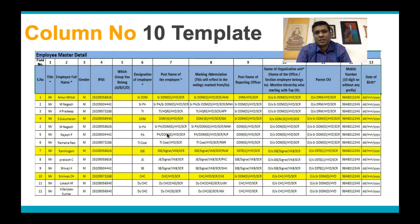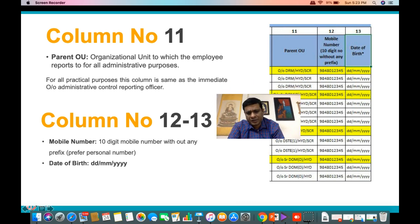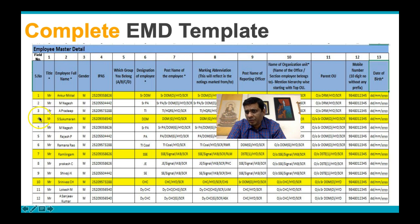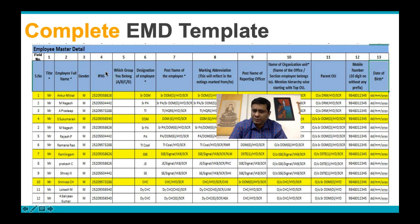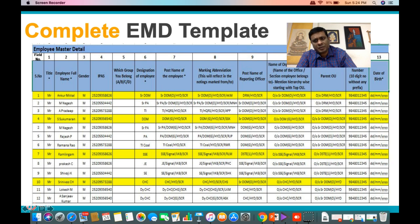The employee needs to be created on the eOffice platform before rolling it out for your unit. To recap: Column 1 is serial number, Column 2 is employee name in full, Column 3 is gender, Column 4 is IPAS number — no confusion up to here. Keep the EMD template filled for all employees to whom you have given the Basic User Database. If your BUD has 250 employees, the same 250 employees must appear in the Employee Master Database as well.